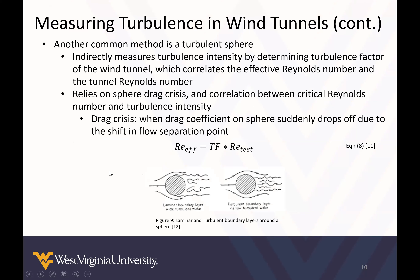Another common measurement for turbulence in wind tunnels is a turbulent sphere, which was more common before hot wire anemometers were created. This indirectly measures turbulence intensity by determining the turbulence factor of the wind tunnel, which correlates the effective Reynolds number and the tunnel Reynolds number. This relies on the sphere drag crisis — the correlation between the critical Reynolds number and turbulence intensity — where the drag crisis is when the drag coefficient suddenly drops due to a shift in the flow separation point. A turbulent boundary layer causes the wake to be smaller and separation to occur much later.